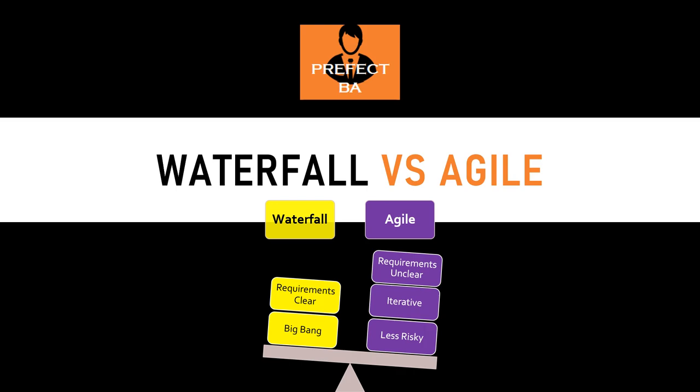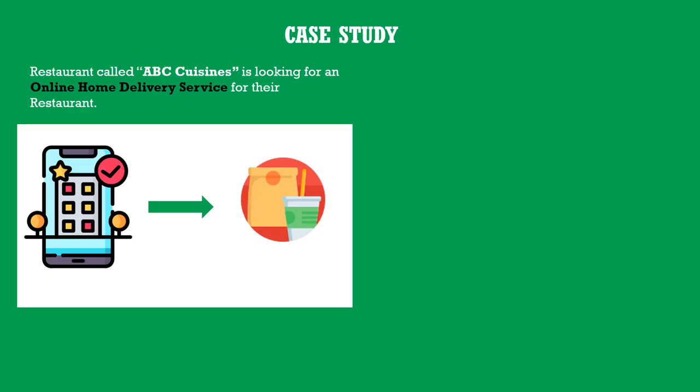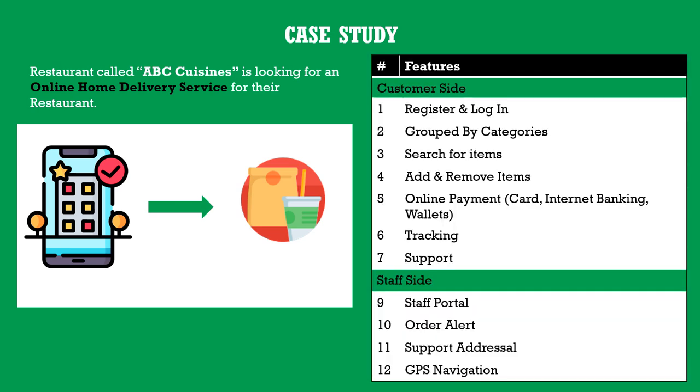As always, we'll use a case study. A restaurant called ABC Cuisines is looking for an online home delivery service. We've covered this case study in previous videos, but it's a very simple one that lets us see how the online home delivery service can be delivered using waterfall and agile methodologies.